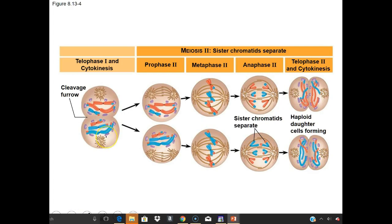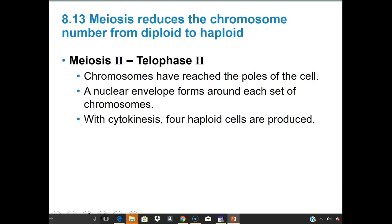In telophase and cytokinesis of meiosis II, we end up with four haploid daughter cells. In prophase II, everyone gets organized with spindle fibers forming; in metaphase II, everyone lines up in the center — this happens for both cells formed in meiosis I. In anaphase II, sister chromatids separate. Telophase and cytokinesis yield four haploid daughter cells that are all different — some have more blue, some more red — four unique cells.